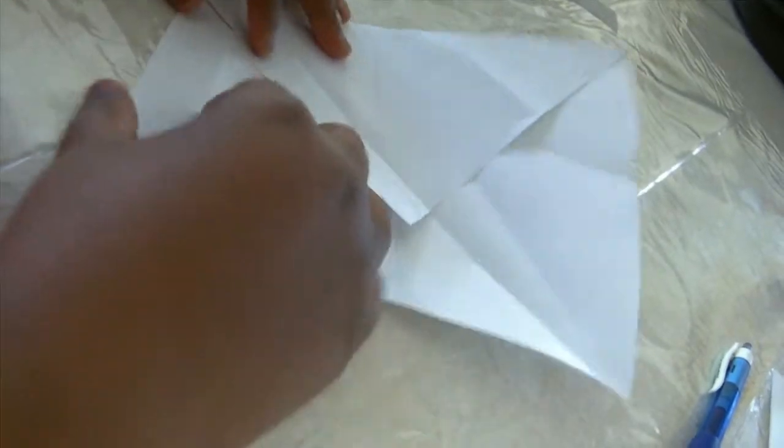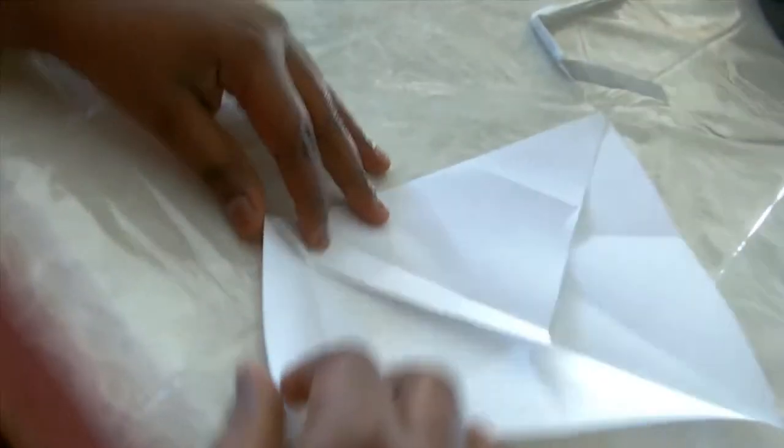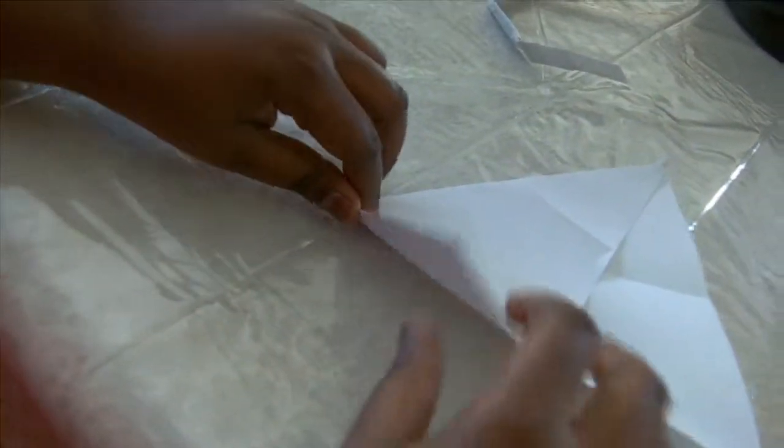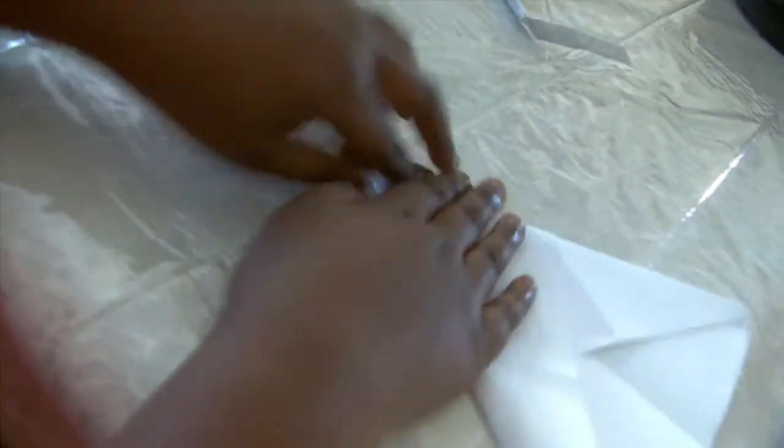And now, what we do now is take this crease. This is the same crease as earlier that we just made. You fold it in. Once you folded it in, you fold it down. And now you have the basic shape. So now it looks like the basic star. Right now, it's just a triangle.